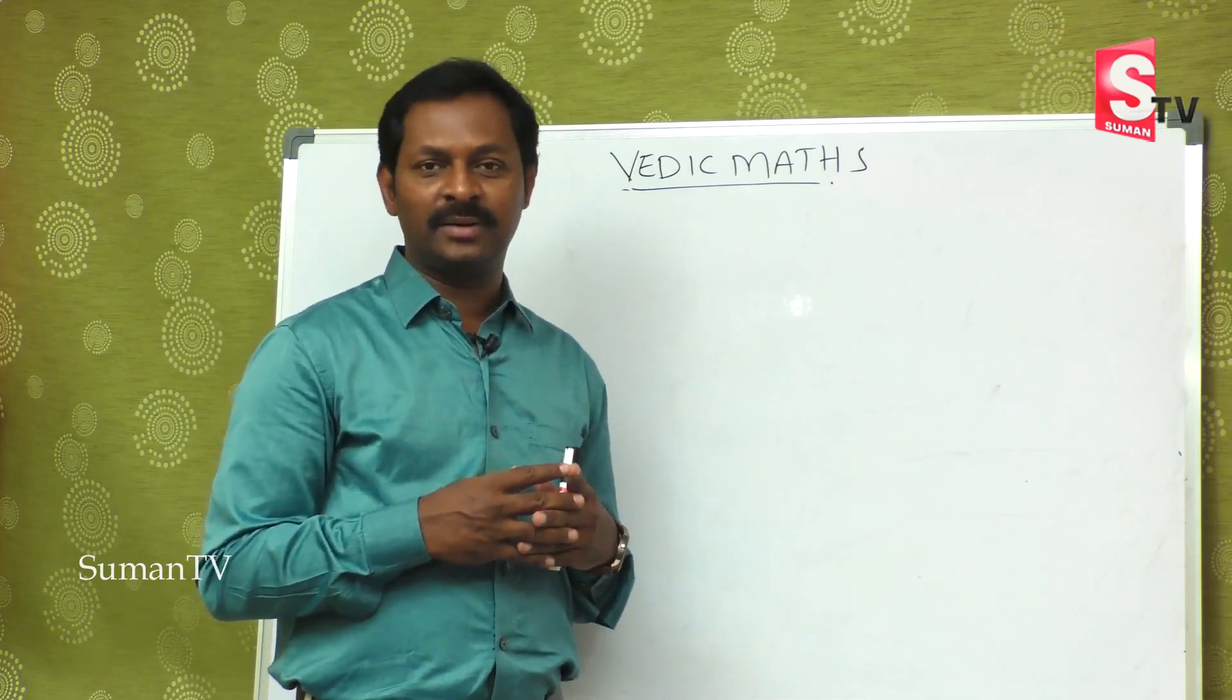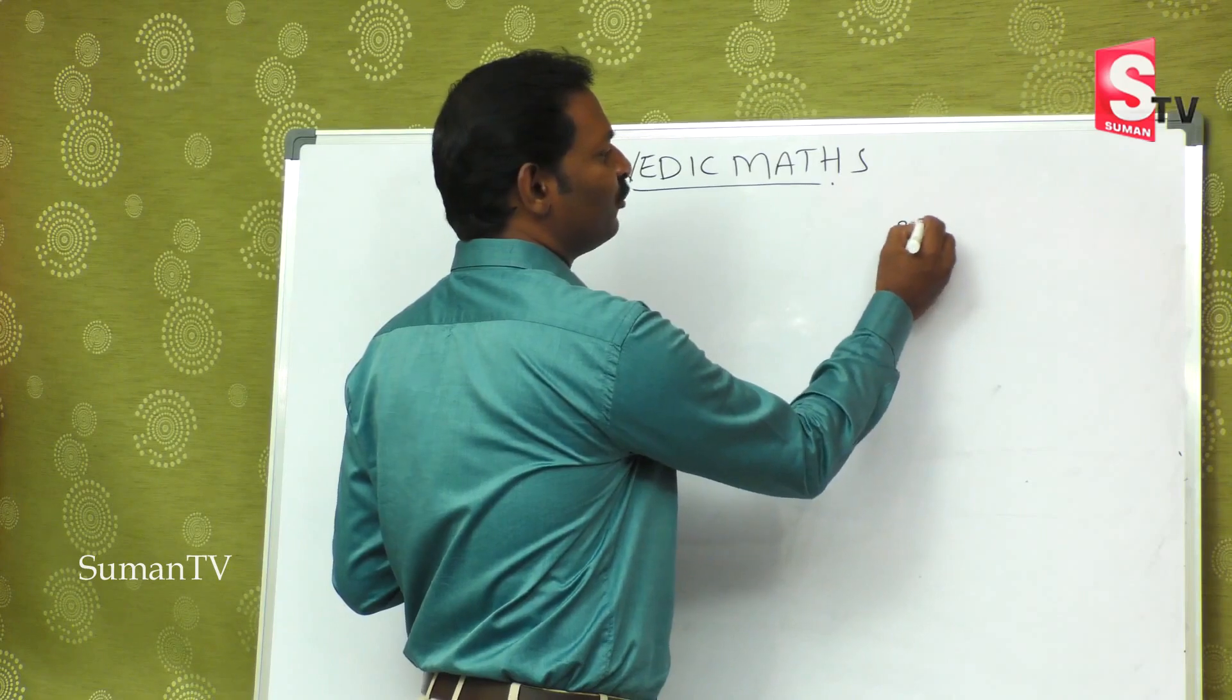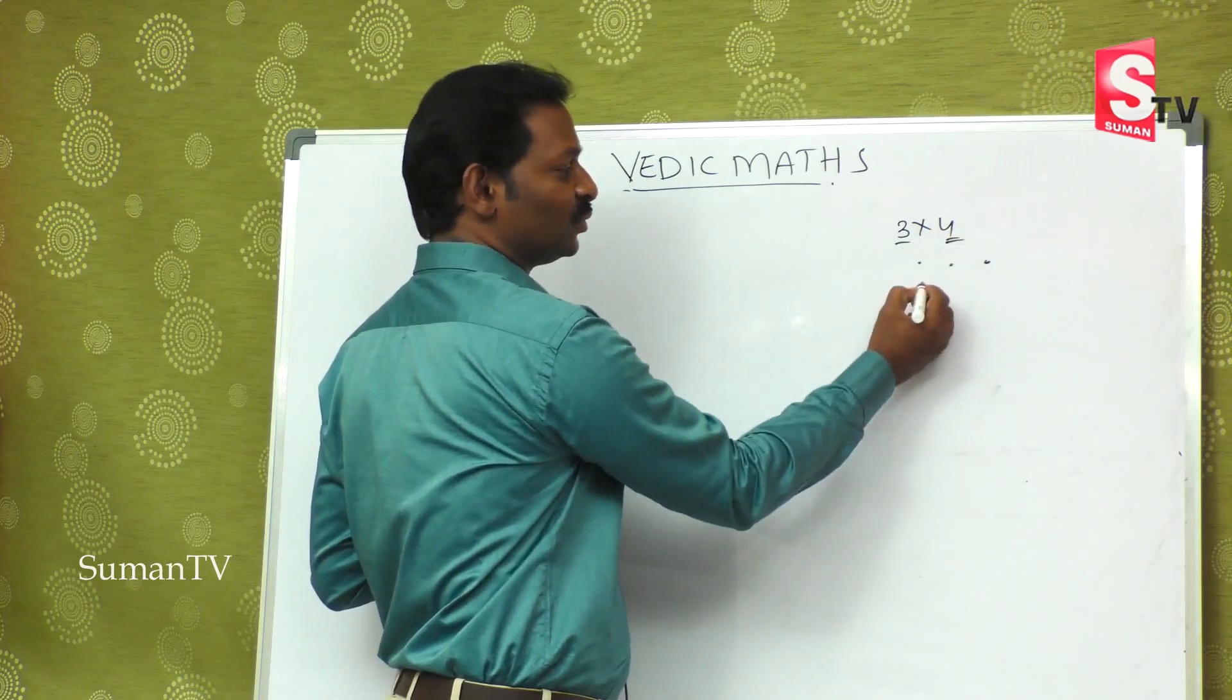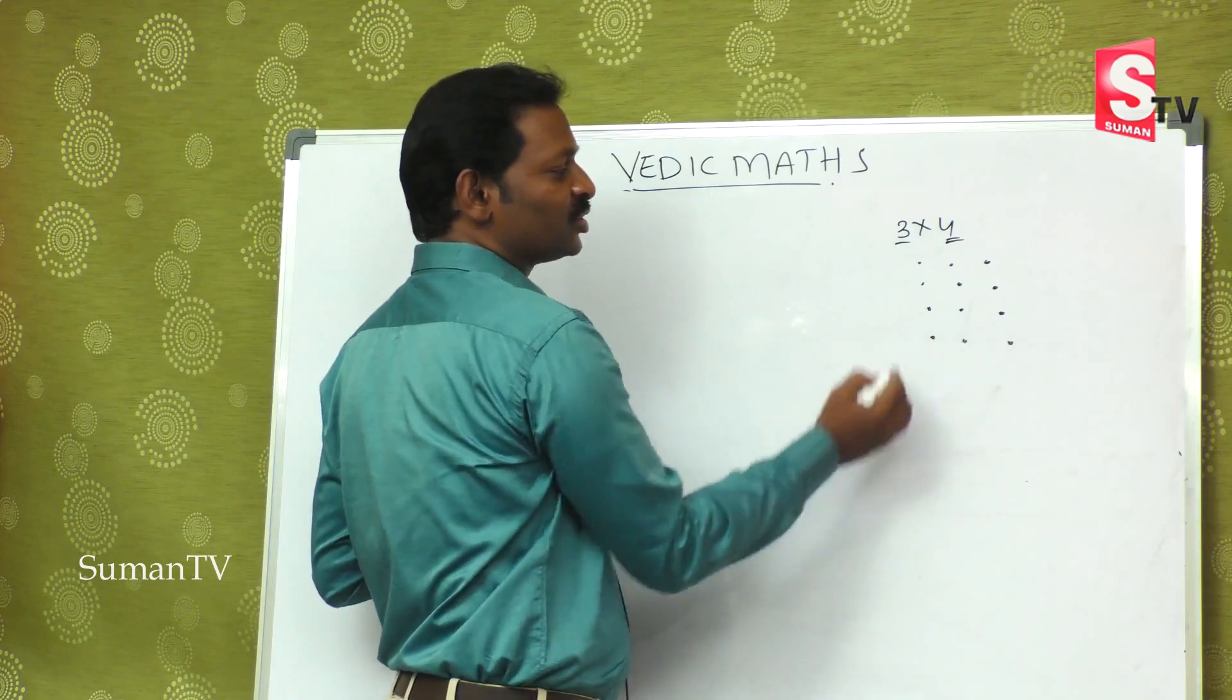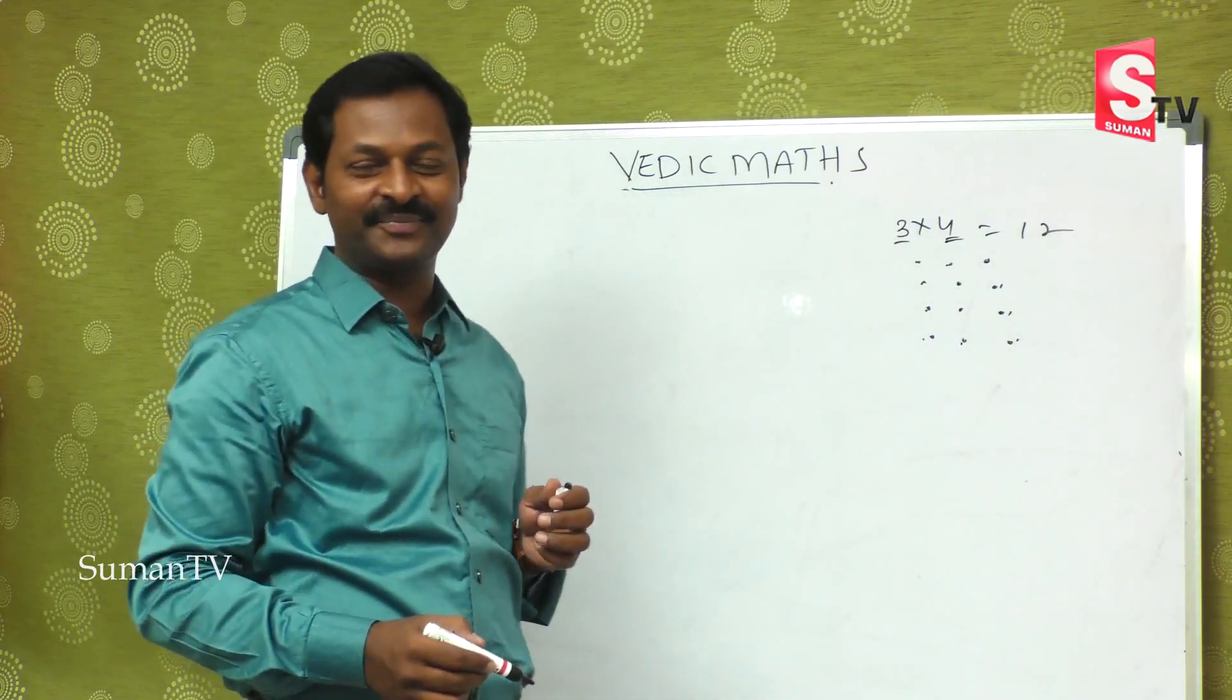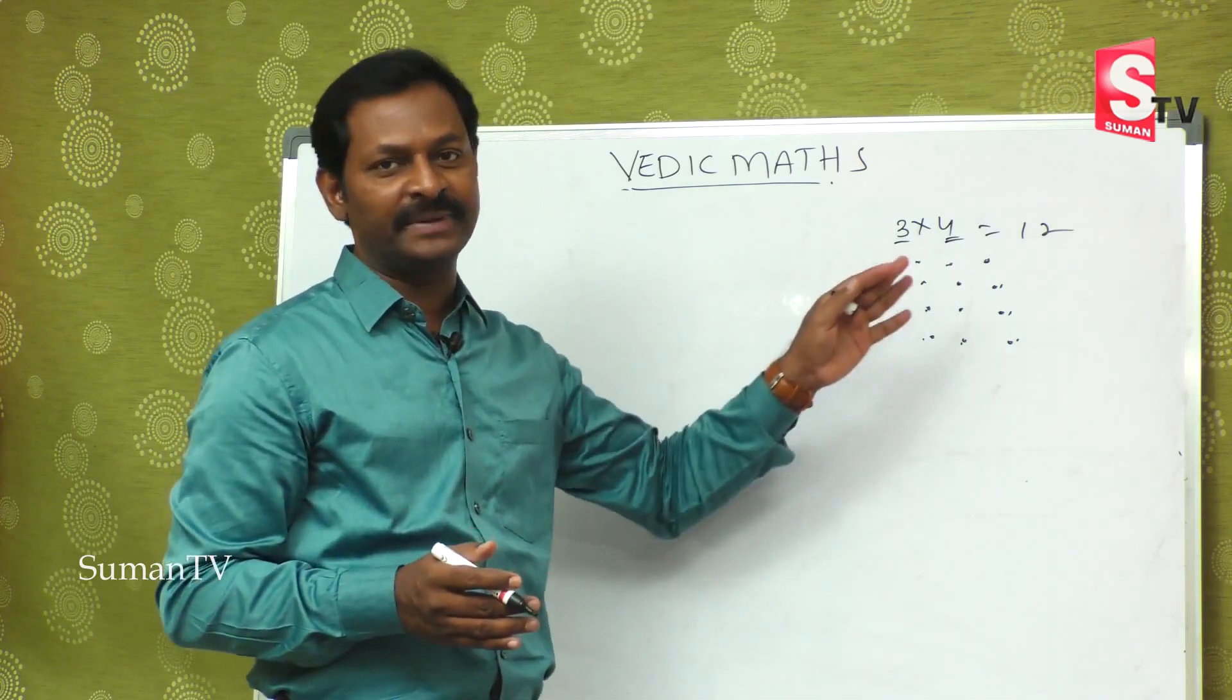Previously, in the previous class we have done multiplication. Suppose 3 into 4, 1, 2, 3 and 4 times: first time, second time, third time and fourth time. So I put 1, 2, 3, 4, 5, 6, 7, 8, 9, 10, 11, 12 is equal to 12. After that we have done tables by hat, we have done at least 9 tables. We have calculated many calculations in the dot method.